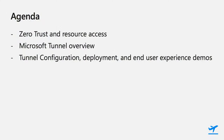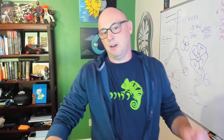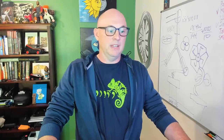From an agenda perspective, we're going to start at the top and drill down. We'll start with a conversation around zero trust and resource access, then move into general tunnel overview and architecture, learn about the components, how they're deployed, and what connections look like. After that, we'll go through tunnel configuration, deployment, and do some demos on the end user experience. At the end of this, you'll understand what the solution looks like, how to configure it in the console, and what your end users can expect from a deployment experience and connectivity perspective.